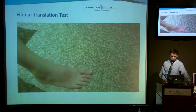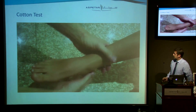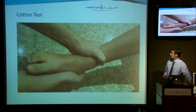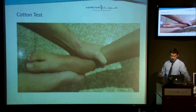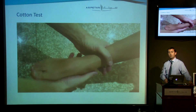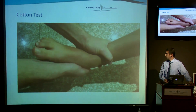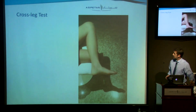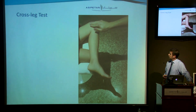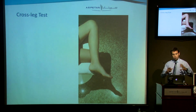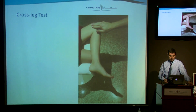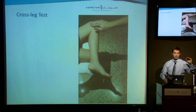The fourth provocative test is the cotton test — it's a kind of medial subtalar glide where you identify the instability that might be there. And of course, don't mix it with hyperlaxity — you have the other side to compare. The last test is the cross-leg test, where you use the medial side of the knee to provocatively induce pain over that distal syndesmotic area. These are the tests: look, listen, feel.